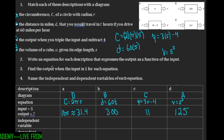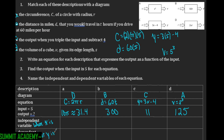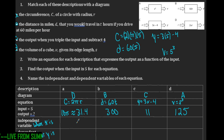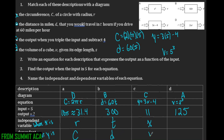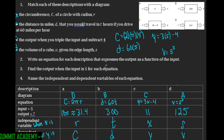Now label the independent and dependent variables. The independent variable is where x is; the dependent variable is where y is. The dependent variable depends on what you plug in for the independent variable. For diagram D: independent is r, dependent is C. For B: independent is t, dependent is d. Then x and y, and then s and V.